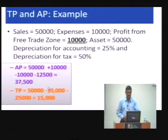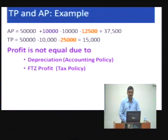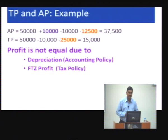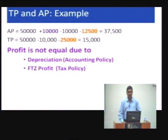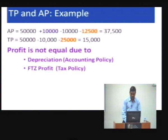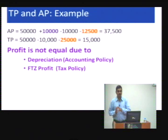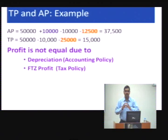The reason accounting profit of 37,500 differs from tax profit of 15,000 is twofold: accounting uses 25% depreciation while taxation uses 50% depreciation, and the free trade zone profit is not included in taxable income. So part of the difference is due to permanent differences and part is due to temporary differences — the depreciation being the temporary difference.